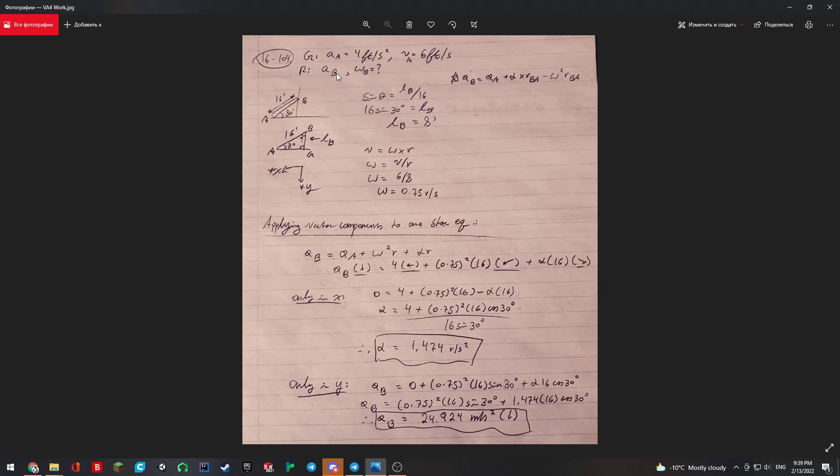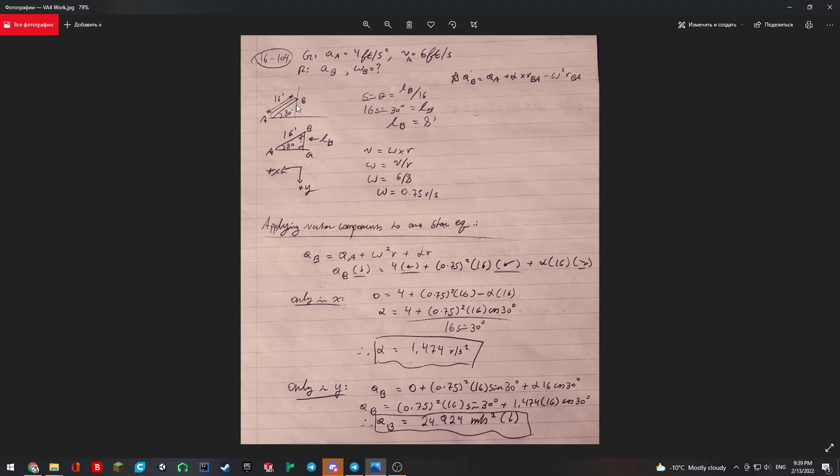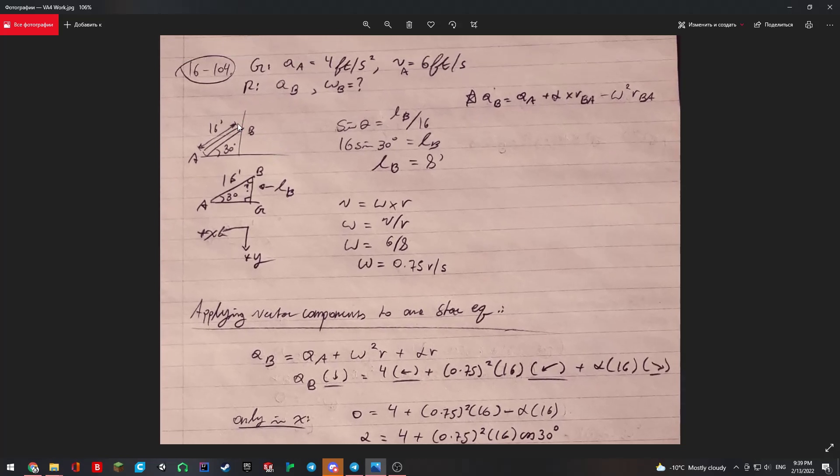We need to find the acceleration at B, the top point, and we also need to find the angular velocity at B. Here we're shown that a 16-foot long ladder is falling with point A, point B, and a 30-degree angle.